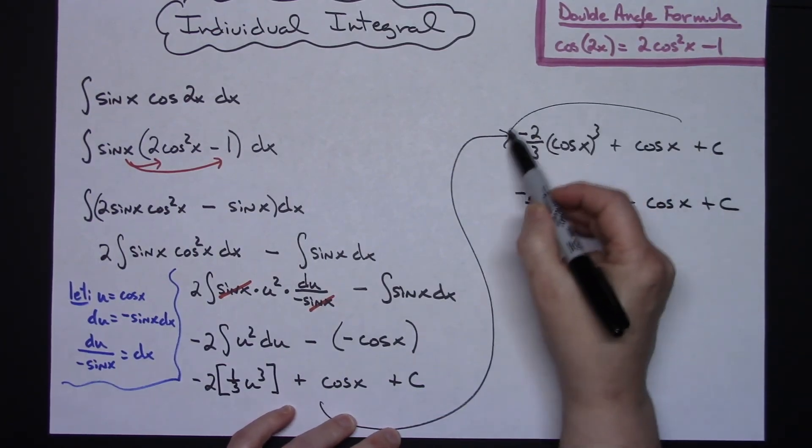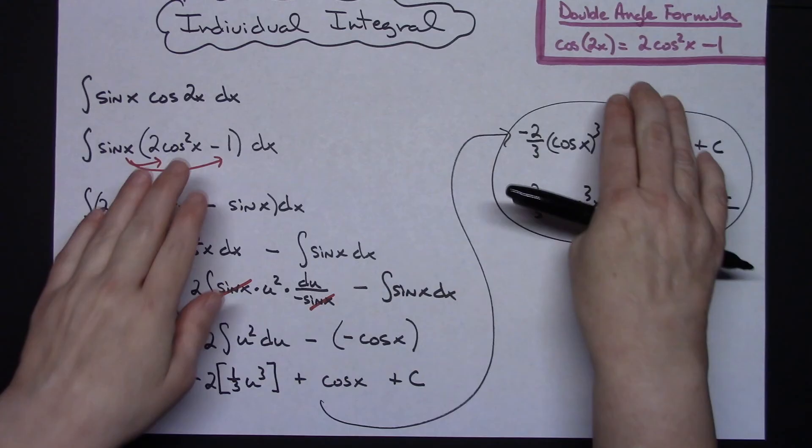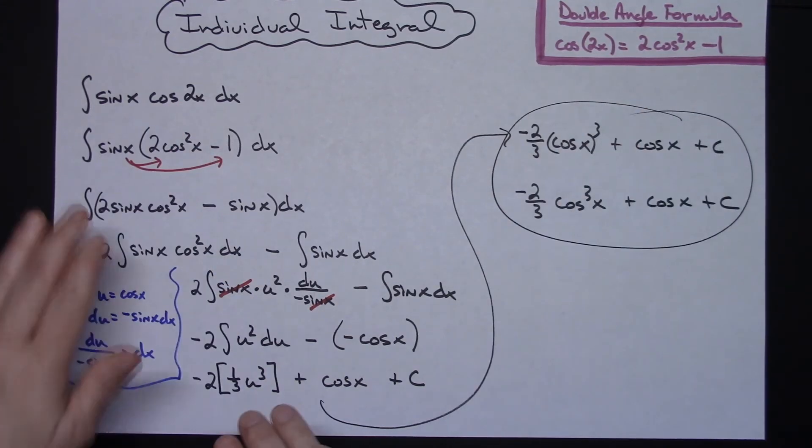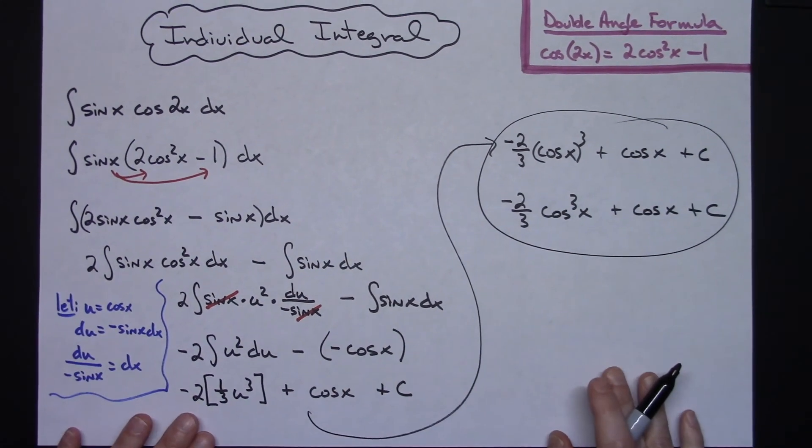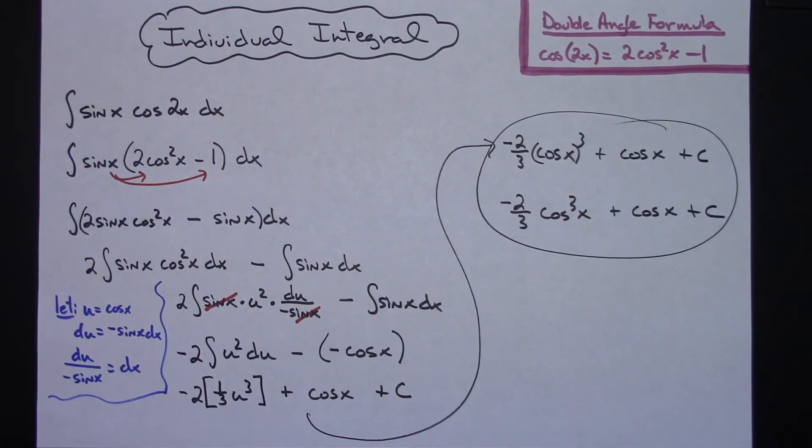Written either way both of those answers are equivalent. So pretty much a straightforward integral. As soon as you get that initial double angle formula substitution, a little bit of arithmetic and then just a basic u substitution on this integral. Thanks for watching. If the videos are helping please share with your friends so that they can benefit as well. And don't forget to subscribe to the channel.